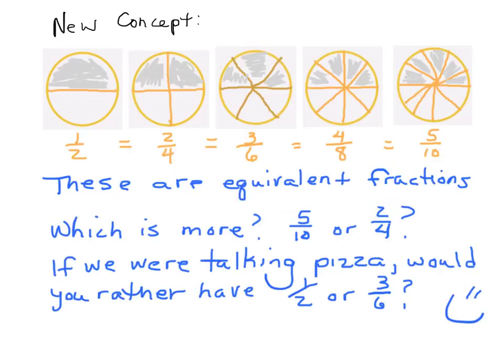Here's the new concept, sorta. One half is the same as two fourths, is the same as three sixths, is the same as four eighths, is the same as five tenths. As you can see, it's all the same. Would you rather have five tenths of a pizza or one half of a pizza? Same difference. If you see that the numerator is exactly half of the denominator, your answer is going to be half. It can be fifty over a hundred — it can be anything.